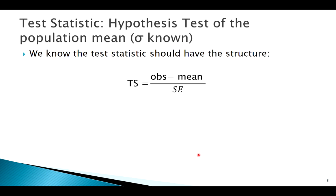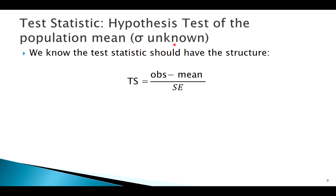It was whatever you've observed minus the mean over the standard error. That tells you how far away is what I observe from the mean. Okay, so the central limit theorem held, our z-confidence interval would look like this.